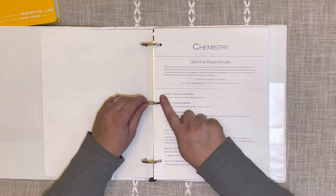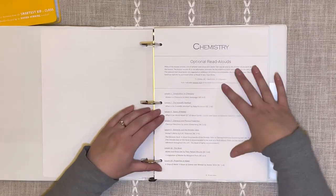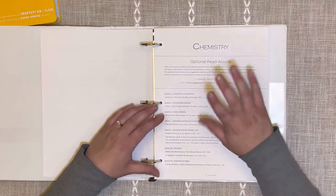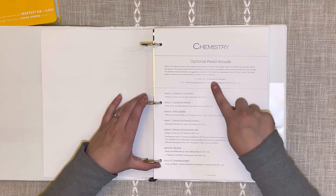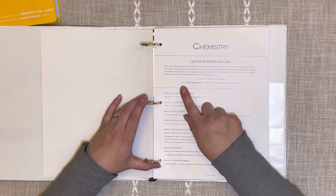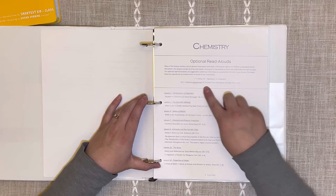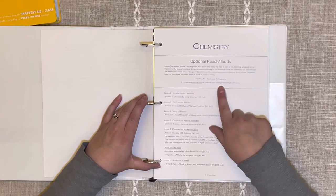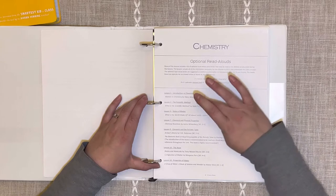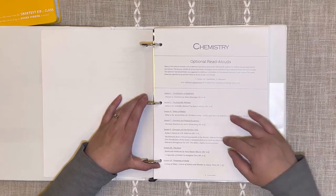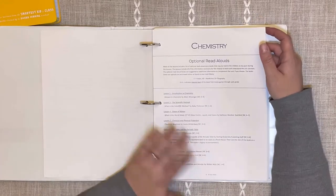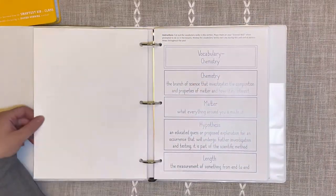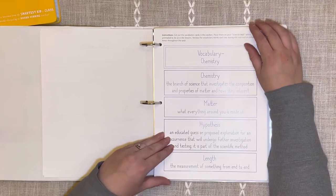It does go into optional read-alouds. It'll tell the lesson and what the optional read-aloud is. I love that they break it up. If it has an F it's fiction, NF nonfiction, B biography. K to six indicates the interest level of the book from kindergarten through sixth grade, so it's an easy way to get an idea of the age appropriateness depending on the ages that you're teaching.